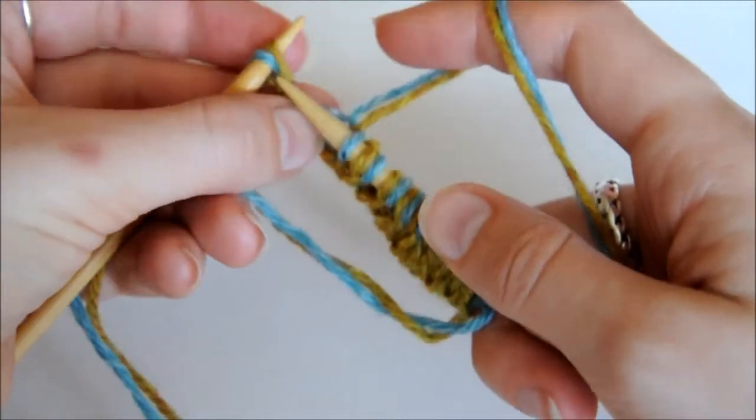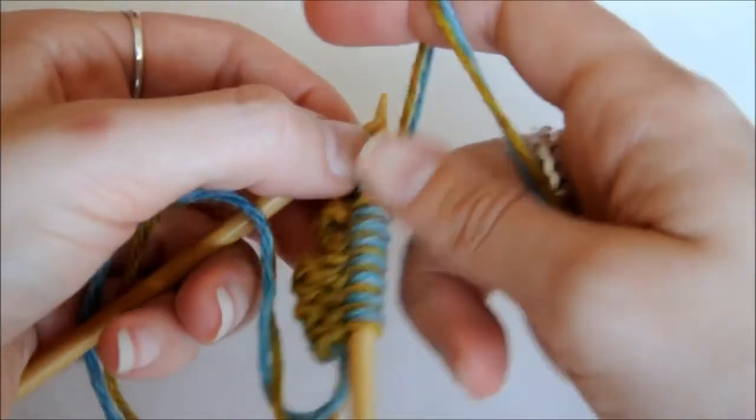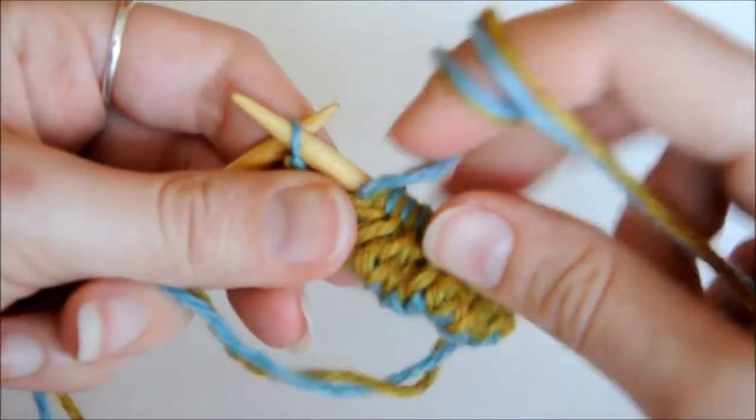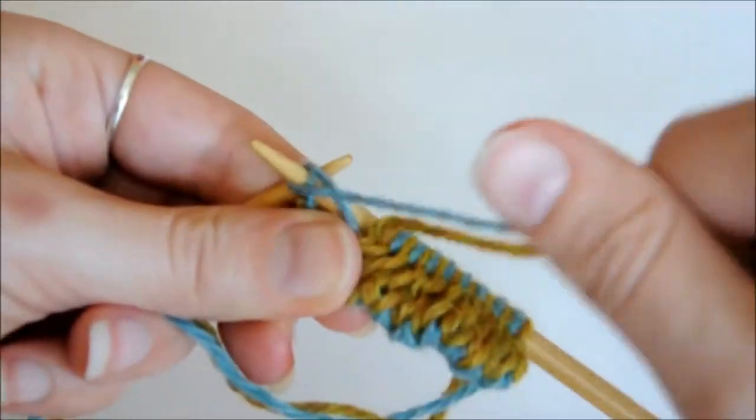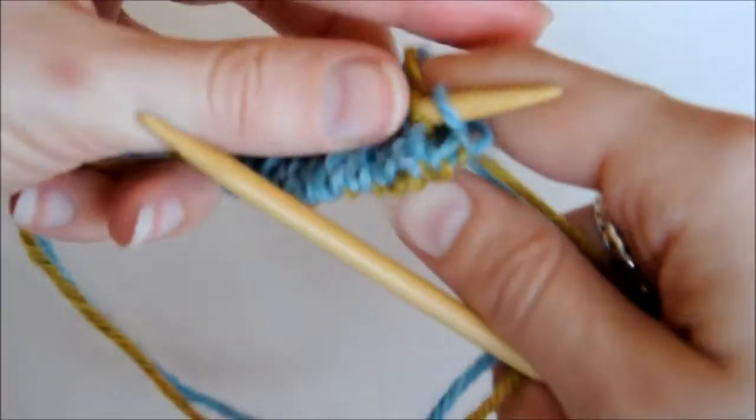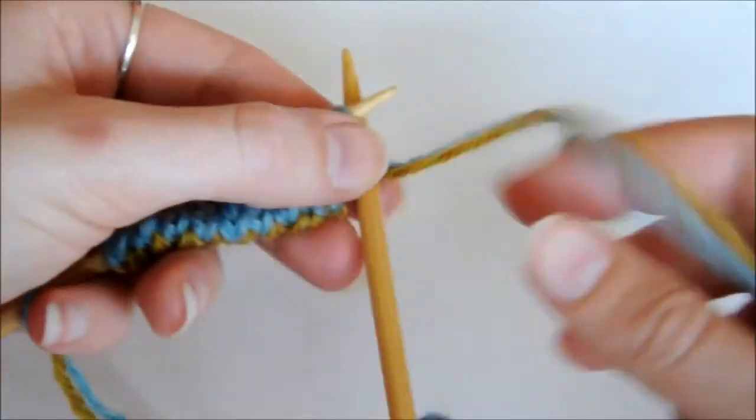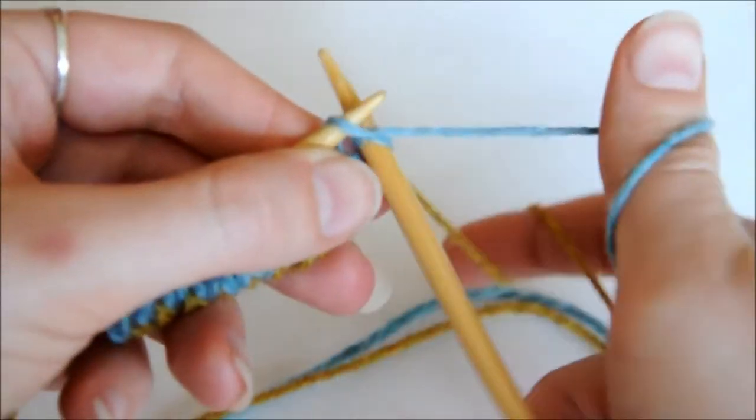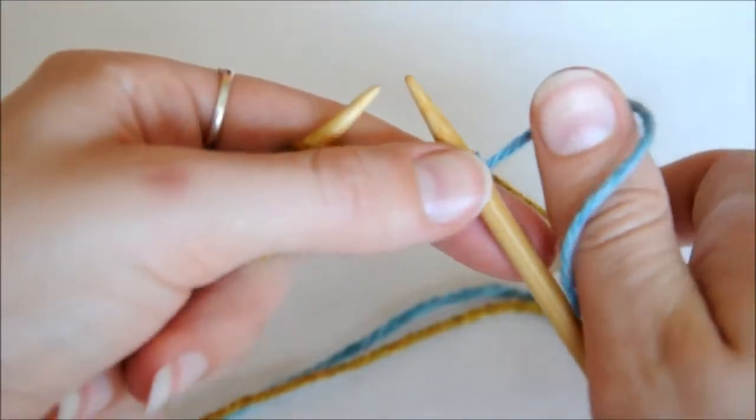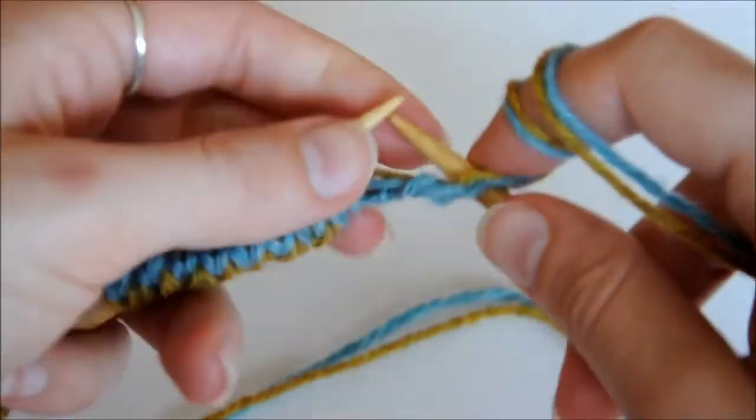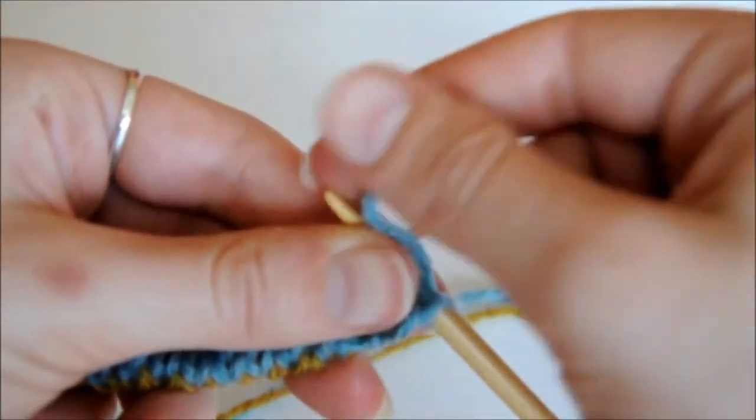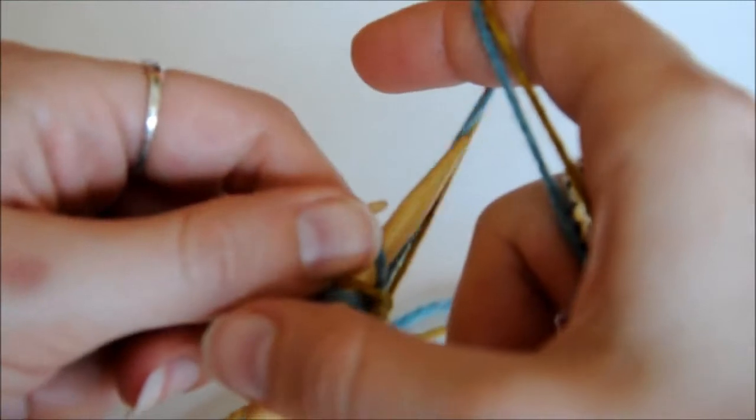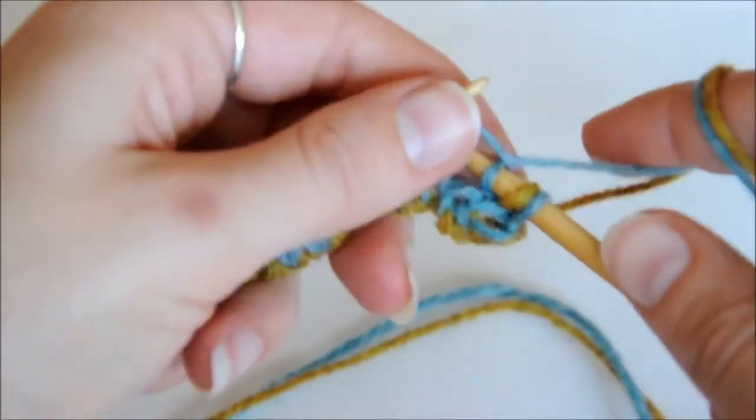Alright, so we're going to work the last pair and finish up this row. Now we're going to turn our work, and we're going to do another twist to secure our yarn at the beginning of this row, and we're just going to work across again. And really that's the basics of double knitting. We're going to keep knitting and purling when we're doing just a plain solid color like we are right now.